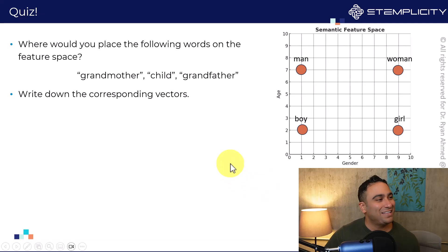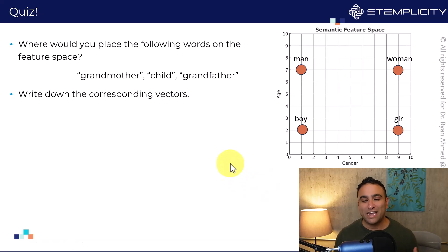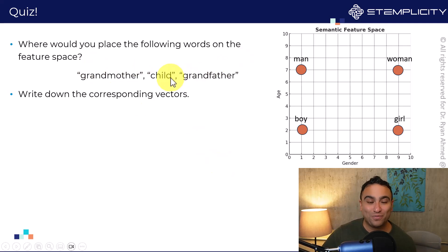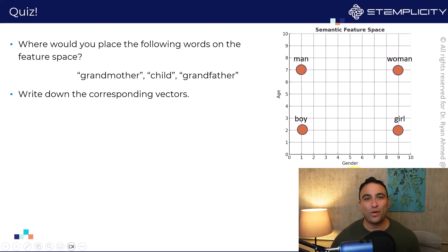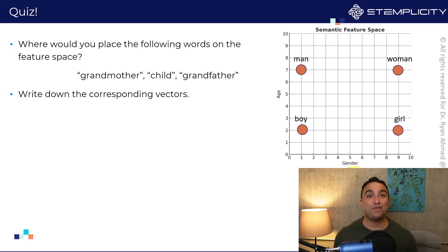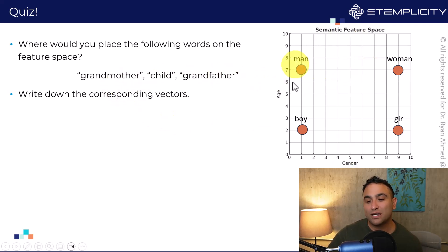Let's go ahead and have a quick quiz. How or where can we represent 'grandmother', 'grandfather', and 'child' on this semantic feature space? Please go ahead and give this quick quiz a try — maybe pause the video. I'm going to show you the answer afterwards.